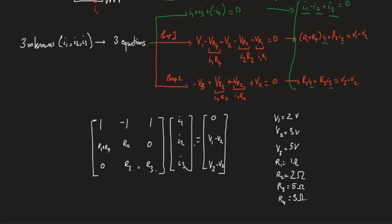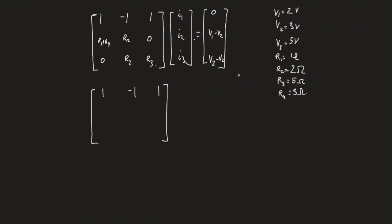Let's replace in this system to get R1 plus R4, which is 1 plus 3, that is 4. R2 is 2, and a 0 over here, and a 0 over here, and R2 is 2 again, and R3 is 5. Multiplied by I1, I2, I3, we get 0; V1 minus V2 is 2 minus 3, that's minus 1; and V3 minus V2 is 5 minus 3, that gives us 2. So now we have a 3 by 3 system.